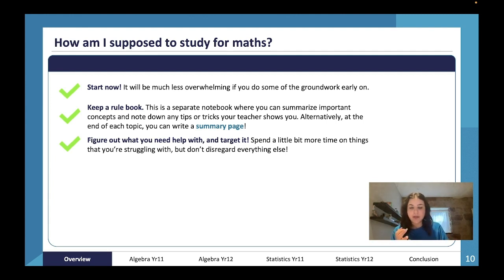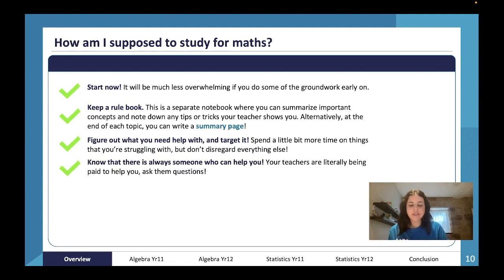Active revision will be keeping a rule book, making a summary page, doing a practice exam, doing a chapter review - something like that. So it's important that you have active revision on the things that you need to target.